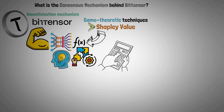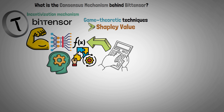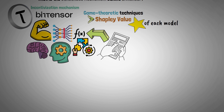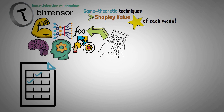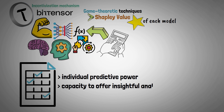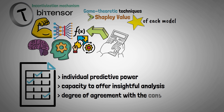By calculating the degree to which each model improves the precision and understanding of the entire model ensemble, the Shapley value quantifies the significance of each model. Models are rated according to their individual predictive power, their capacity to offer insightful analysis, and their degree of agreement with the consensus formed by other models.